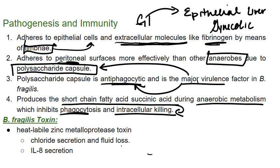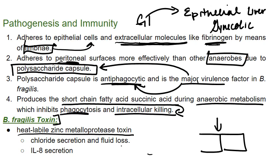The other thing this organism has up its sleeve is the B. fragilis toxin. The B. fragilis toxin is a heat-labile zinc metalloproteinase toxin. What it does is cause morphologic changes in the epithelium. When you change the structure of the epithelium, the epithelium really doesn't like it — because your epithelium is essentially like a brick wall that controls fluid excretion and secretion. When that epithelium is disrupted and not intact, fluid can go through way too easily, leading to fluid loss, chloride secretion, and all sorts of badness.